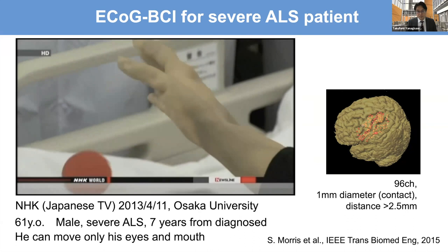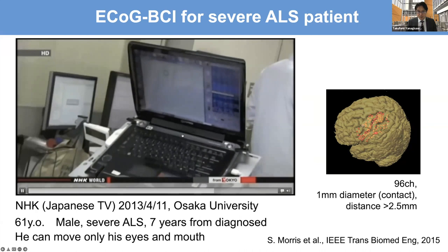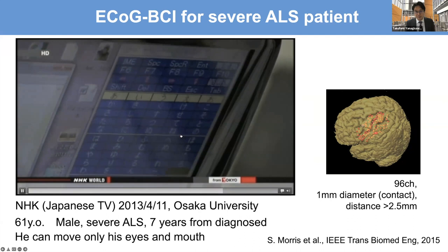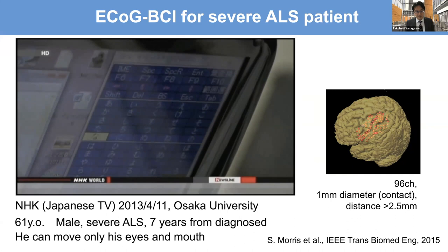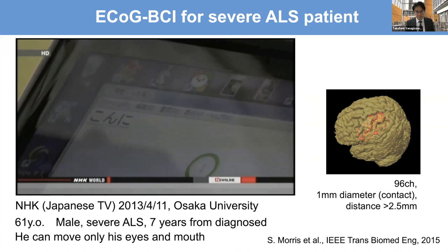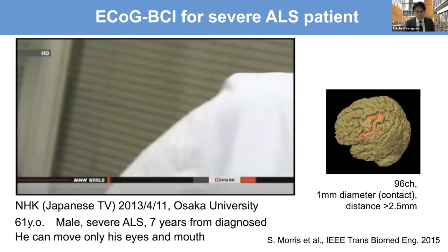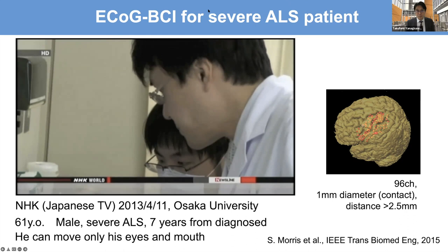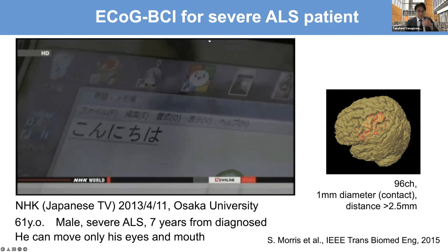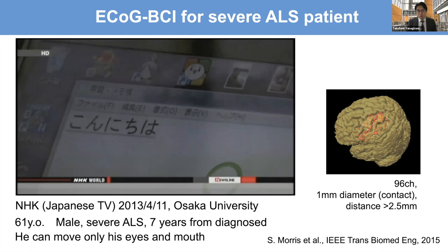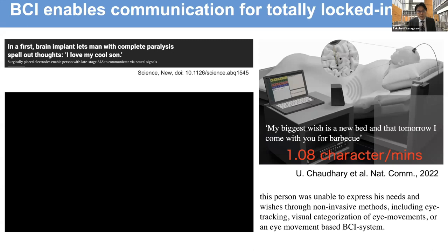We also had him try to type words on a computer using only the power of his brain — moving a cursor over a keyboard on the screen and selecting characters. He tried to write five characters for 'konnichiwa,' Japanese for hello. After the doctor made numerous small adjustments to programming, Tachibana succeeded. He was able to control the robotic hand and type using his brain signals, even though he cannot move his own body.